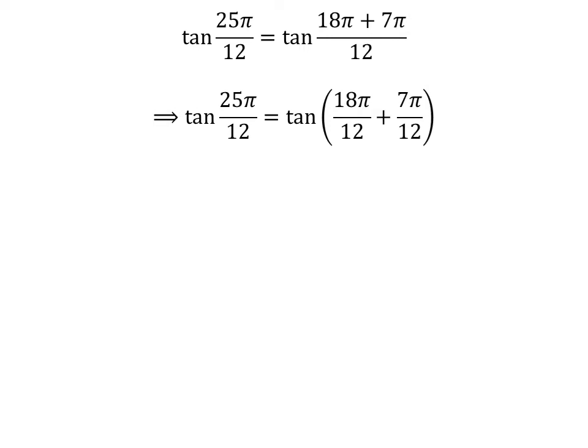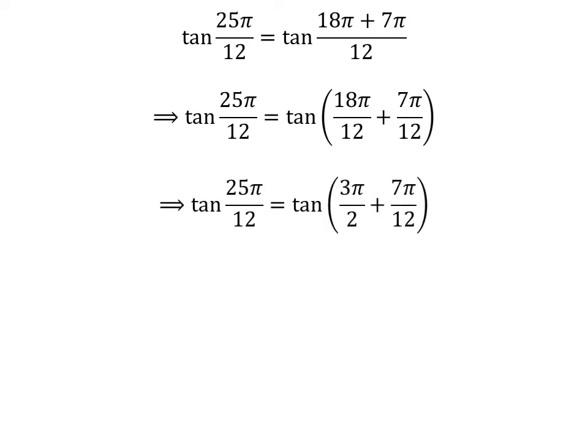The fraction can be written as a sum of two fractions. So, tangent of 25 times pi upon 12 is equal to tangent of 18 times pi upon 12 plus 7 times pi upon 12. Cancelling out the common factor in the numerator and denominator in each fraction gives us tangent of 25 times pi upon 12 is equal to tangent of 3 times pi upon 2 plus 7 times pi upon 12.